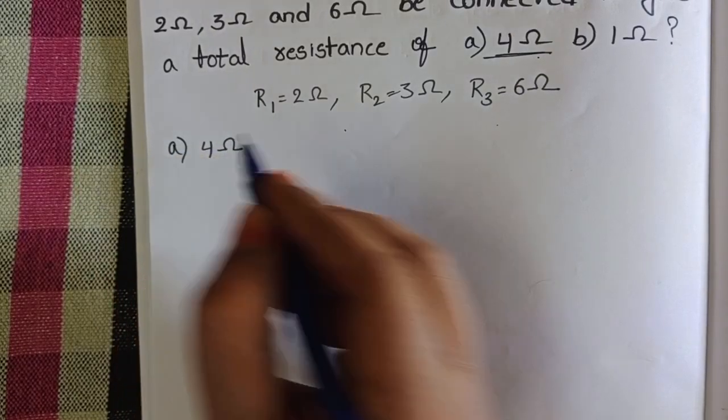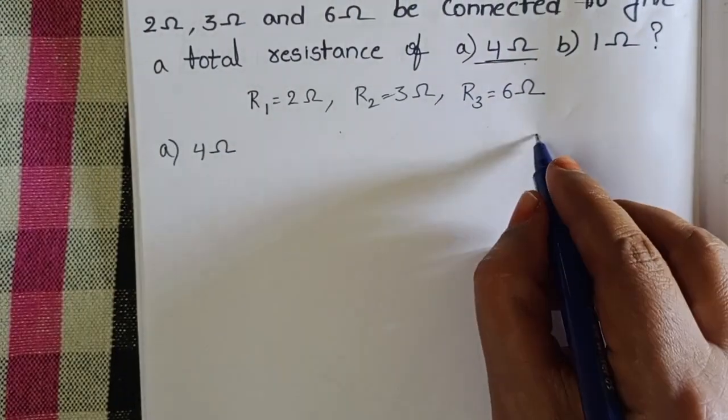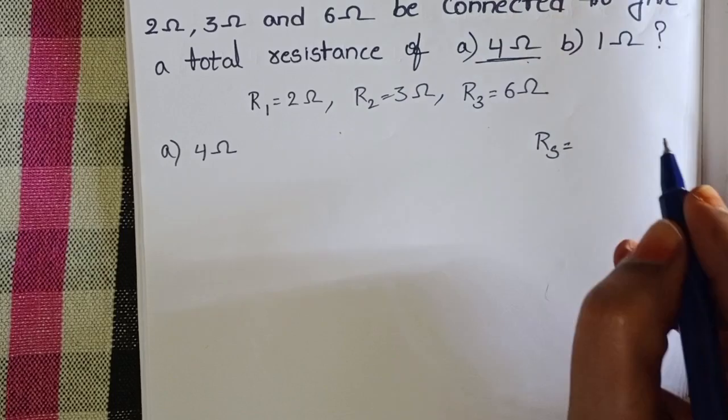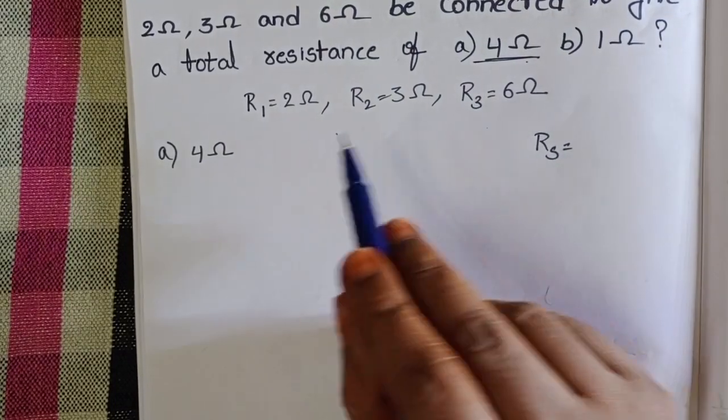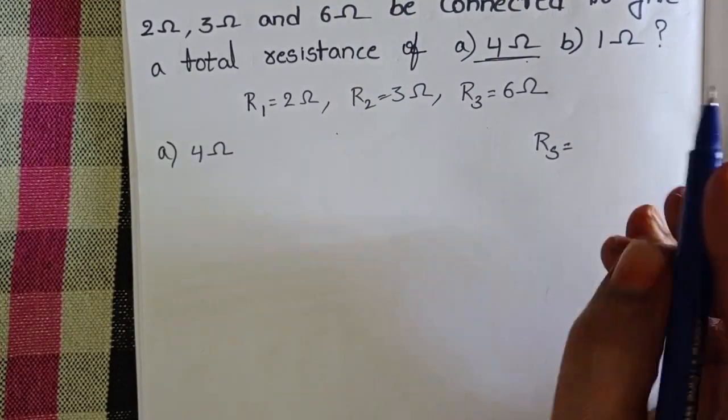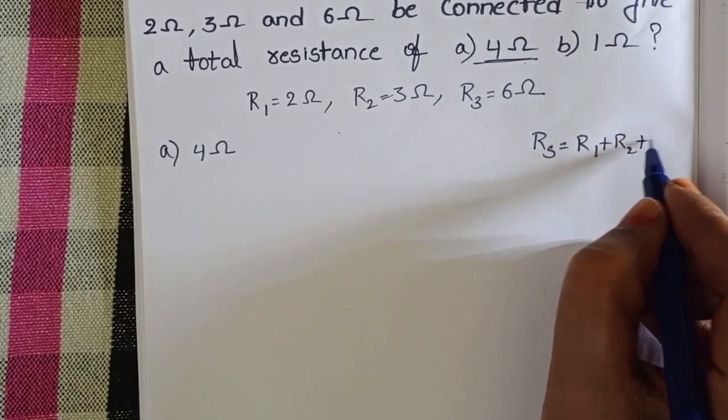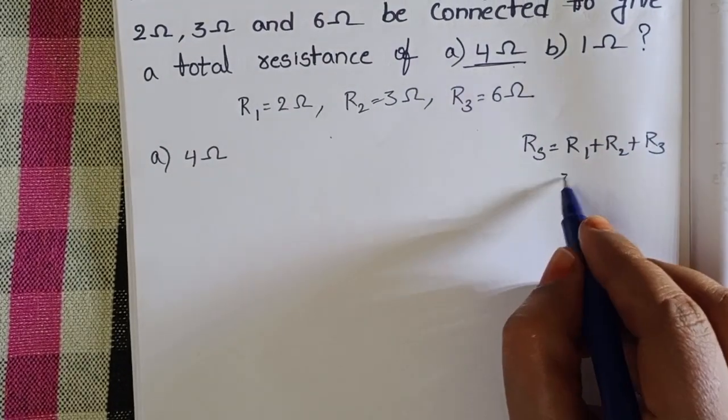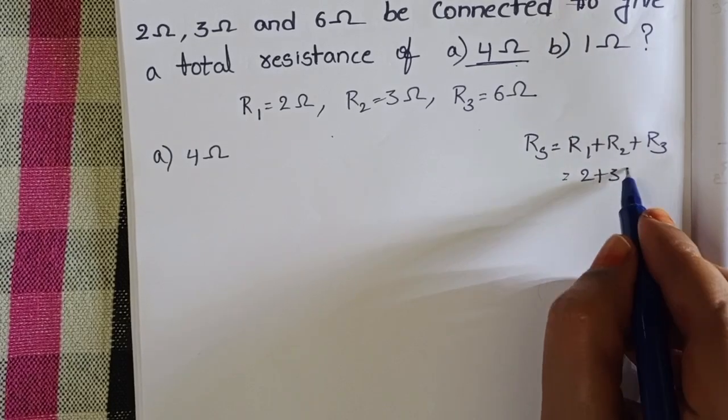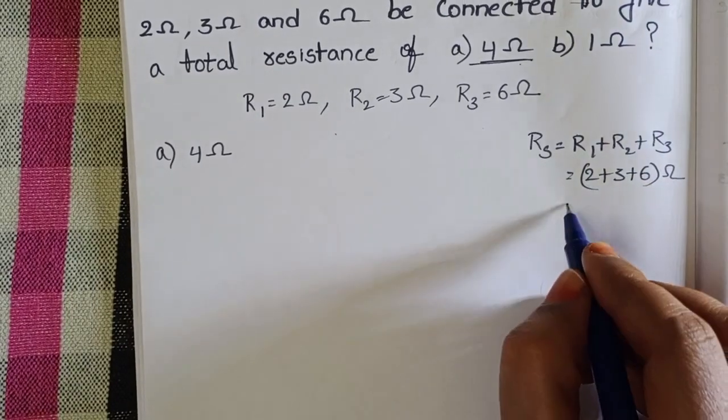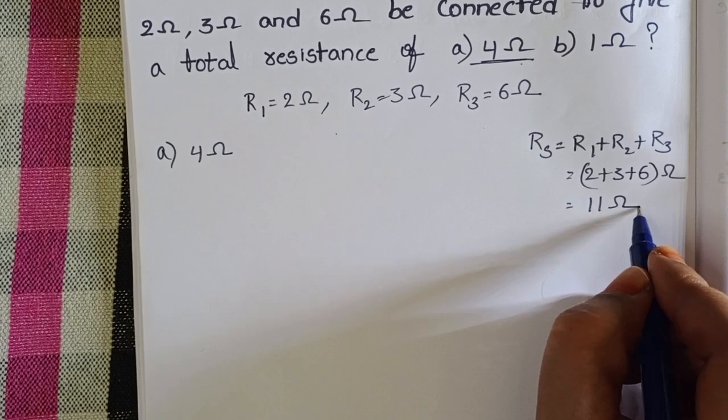When we connect the given three resistors in series combination, then equivalent resistance becomes the sum of the resistances of the three resistors. R1 plus R2 plus R3. 2 plus 3 plus 6 ohms, that is equals to 11 ohms.